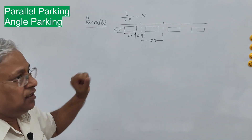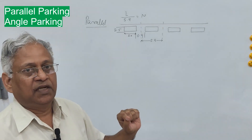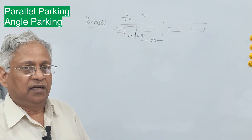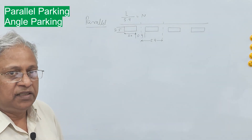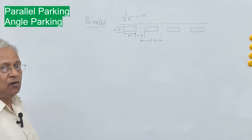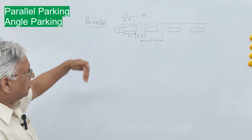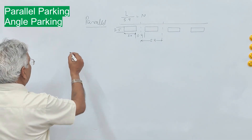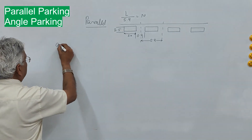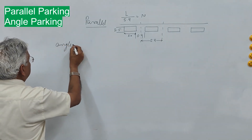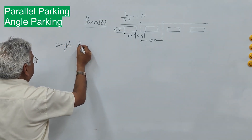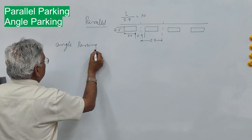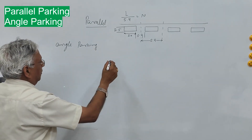Parking can also be done at an angle, and this angle can be varied — 30 degrees, 45 degrees, 60 degrees, or it can be perpendicular to the curb line. In the case of angle parking, the vehicles are parked at an angle with the curb line.